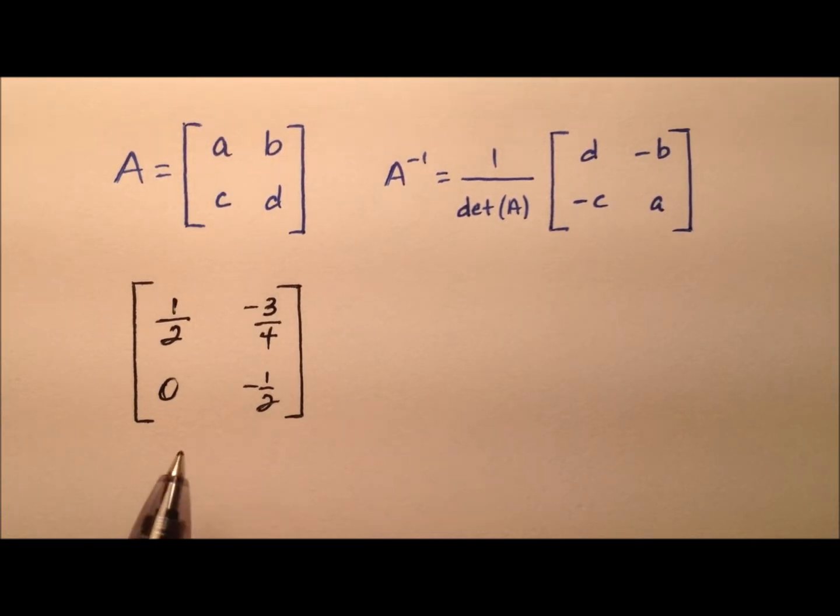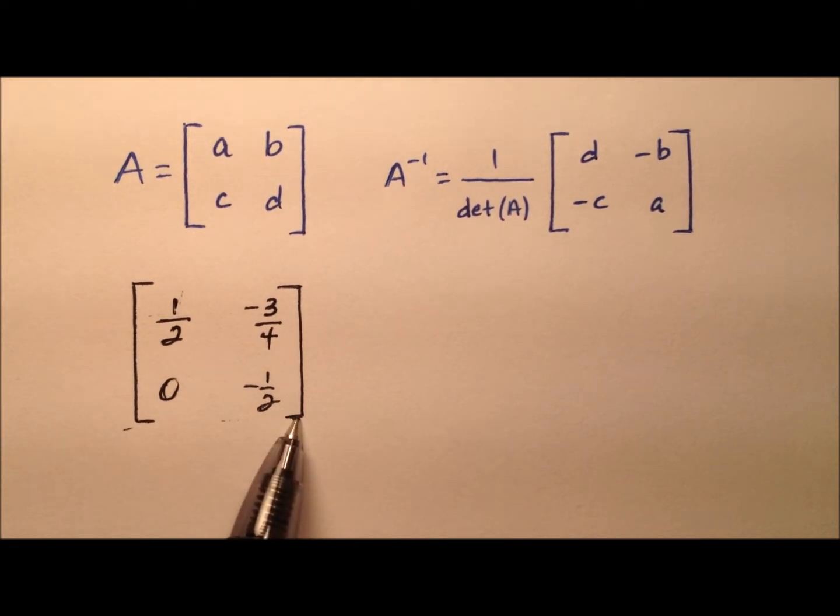In this example, we're going to take a look at this square matrix. It's a 2 by 2, 2 rows, 2 columns, and we're going to find its inverse if possible.